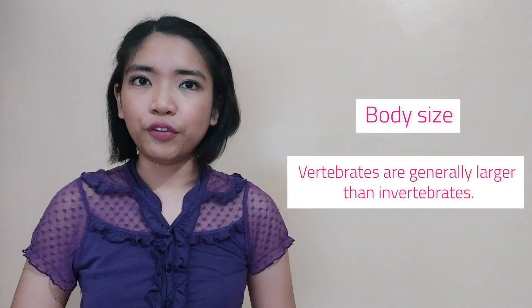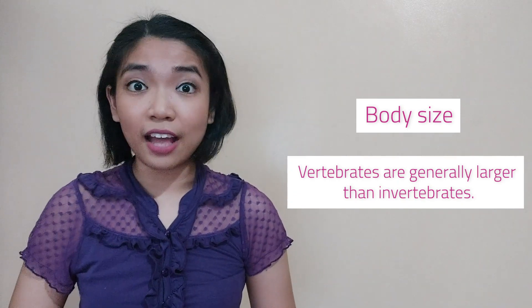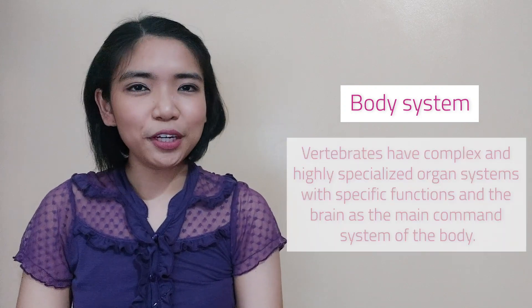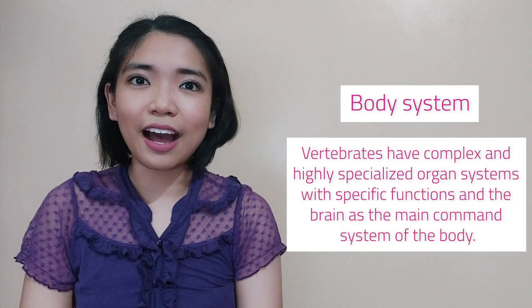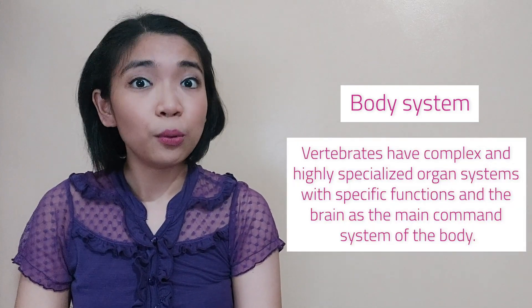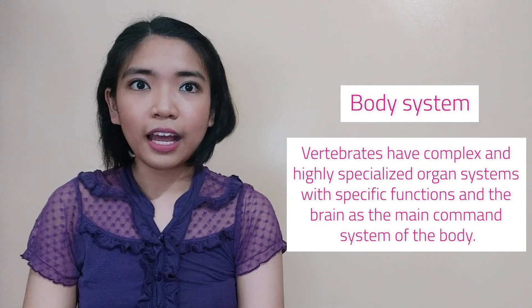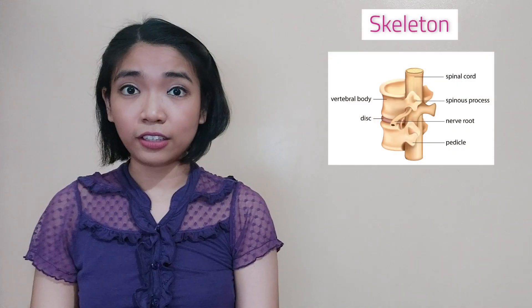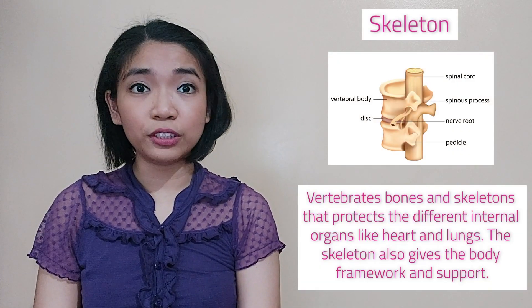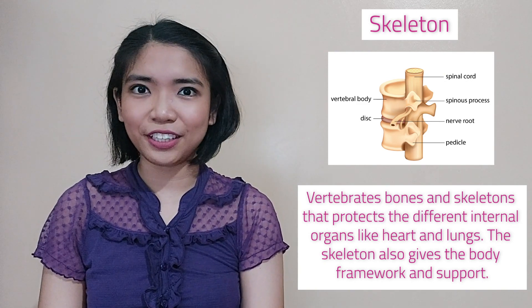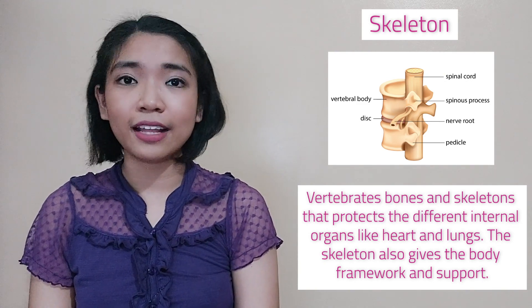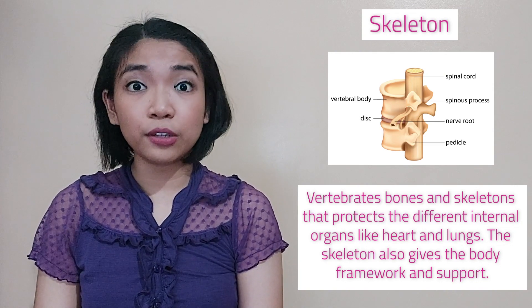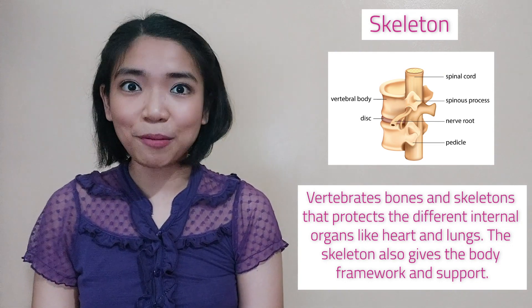Second is body size. Vertebrates are generally larger than invertebrates. Third is body system. Vertebrates have complex and highly specialized organs with specific functions, with the brain as the main command of the body. Fourth is skeleton. Vertebrates have bones and skeletons that protect the different internal organs like the heart and lungs. The skeleton also gives the body framework and support.